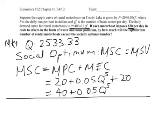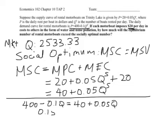So, in fact, that's going to be where 400 minus 0.1 Q equals 40 plus 0.05 Q, and that gets us to 0.15 Q equals, now, not 380, but rather 360,